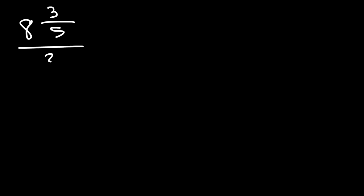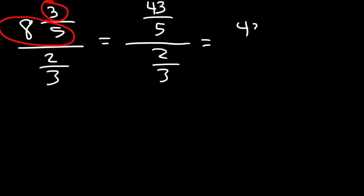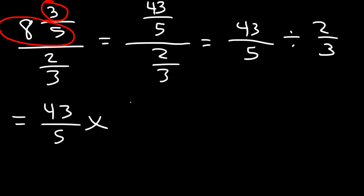Now let's move on to our third example: 8 and 3 fifths divided by 2 over 3. So 8 times 5 is 40, plus the 3 on top, that's 43. We can write this as 43 over 5 divided by 2 over 3, which is the same as 43 over 5 times 3 over 2. 43 times 3: 40 times 3 is 120, 3 times 3 is 9, so this is 129 over 5 times 2, which is 10.